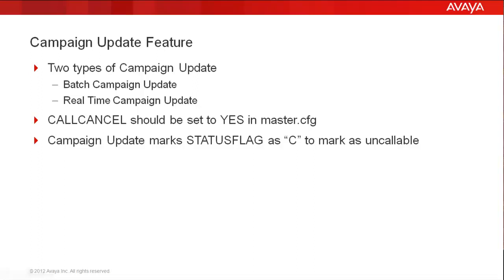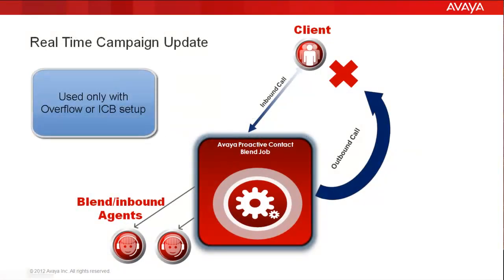The call cancel parameter in the master.cfg should be set to yes to turn on the campaign update feature. The status flag field in the calling list record is marked with a letter C to mark that record as uncallable. The real-time campaign update is used with overflow or intelligent call blending setup where the inbound calls are handled by the Proactive Contact itself.